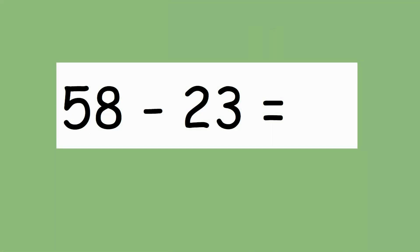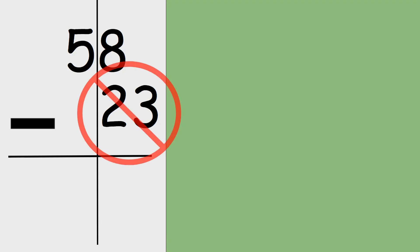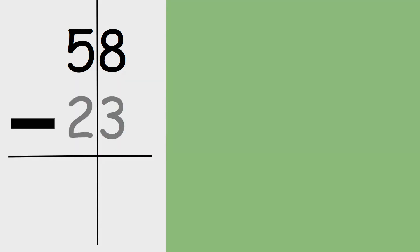Sometimes we might see a subtraction question written this way, and it's going to be our job to line up the place value spots. Is this correct? Oops, I made a mistake — but that's okay, because mistakes help us learn. If we subtract different place value spots, we will get the wrong answer. So let's line them up correctly.